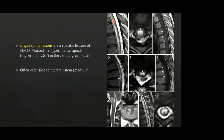On sagittal sequences, long-segment myelopathy involving the thoracic cord can be seen, with minimal or vague enhancement on post-contrast images. On another image, involvement of the brainstem and cervical medullary junction is demonstrated.